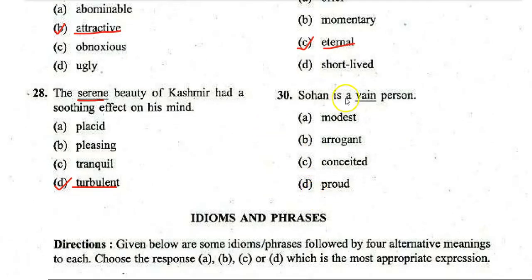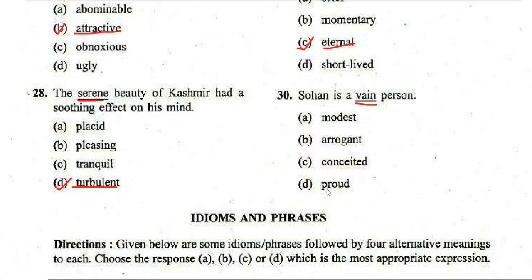Last antonym question: 'Sohan is a vain person.' Options: A. Modest, B. Arrogant, C. Conceited, D. Proud. The correct answer is A — 'modest.' The antonym of 'vain' is 'modest.'